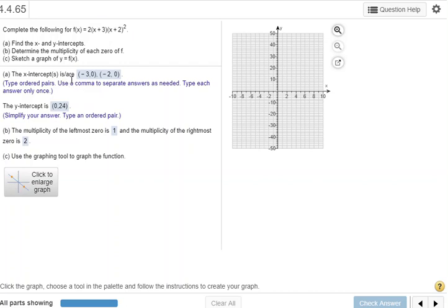Finding the x-intercepts, those occur when y is 0. Since they're in factors like this, you can take each factor and set it equal to 0. So x would be negative 3, and x would be negative 2. They do want you to put it in ordered pairs with a comma in between.